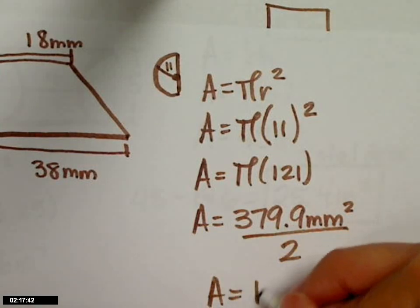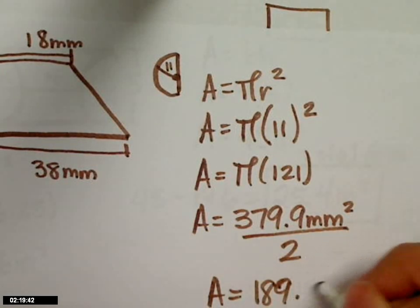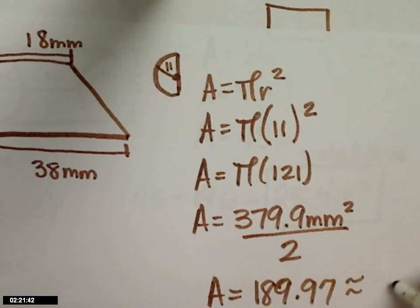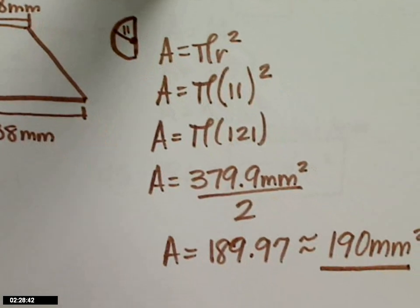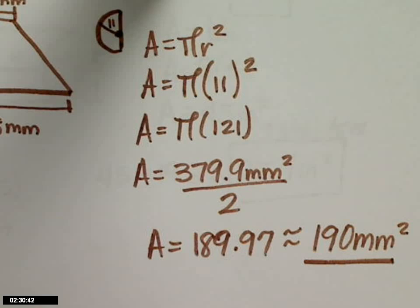So we divided that by two. And the area is 189 millimeter squared. So this is the area for my semicircle. What's next after that? My trapezoid, right?